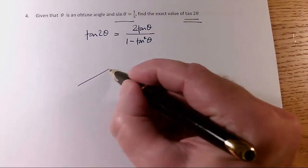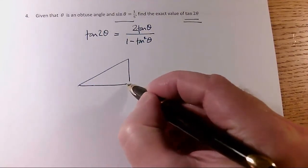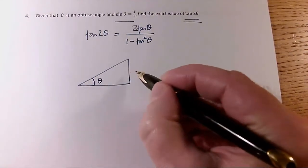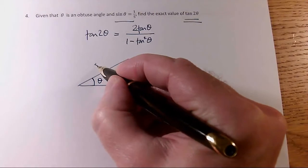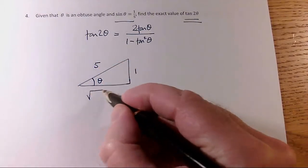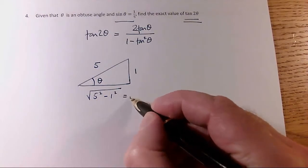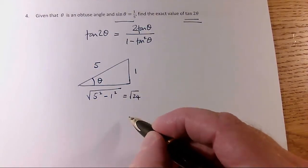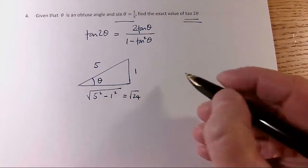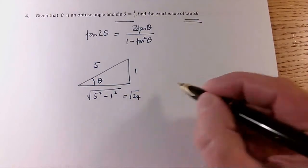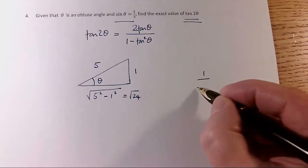So sin θ is, θ is here, sin θ is opposite over hypotenuse. So this one here will be the square root of 5² minus 1², which is √24. So tan θ looks like it's going to equal opposite over adjacent, which is 1 over √24.